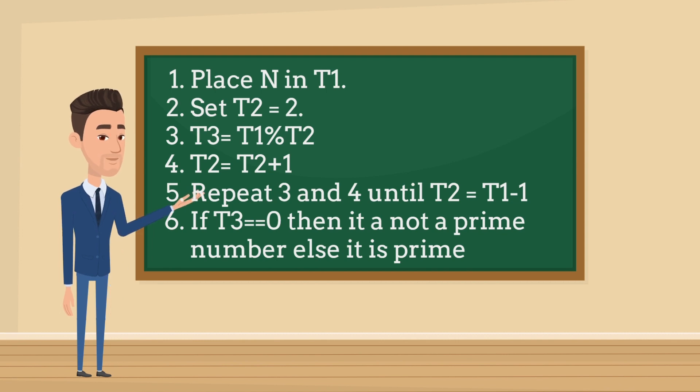Step 5, repeat steps 3 and 4 until T2 equals T1 minus 1. If T3 equals 0, then it is not a prime number, else it is a prime number.